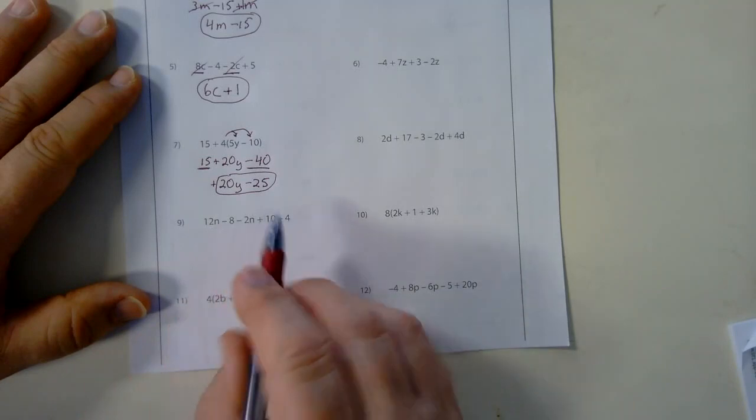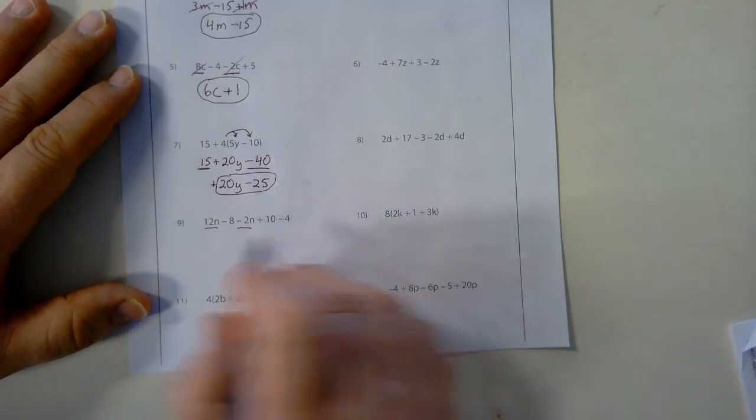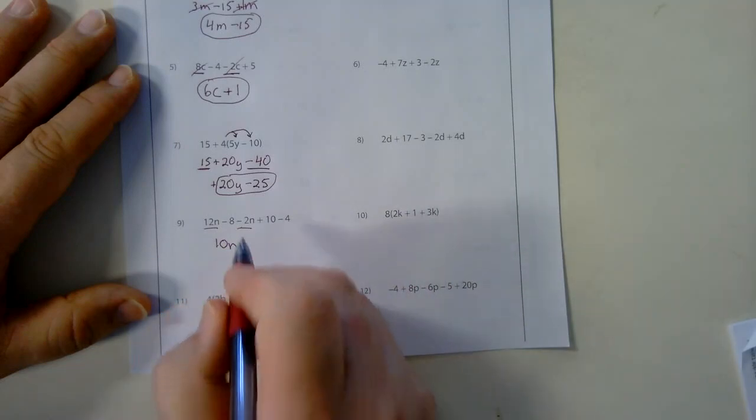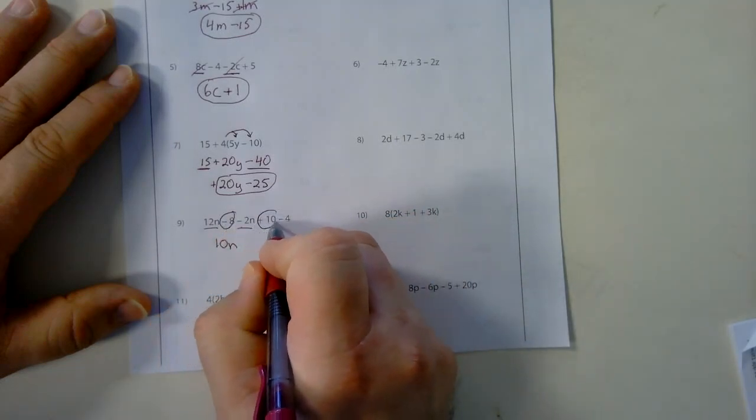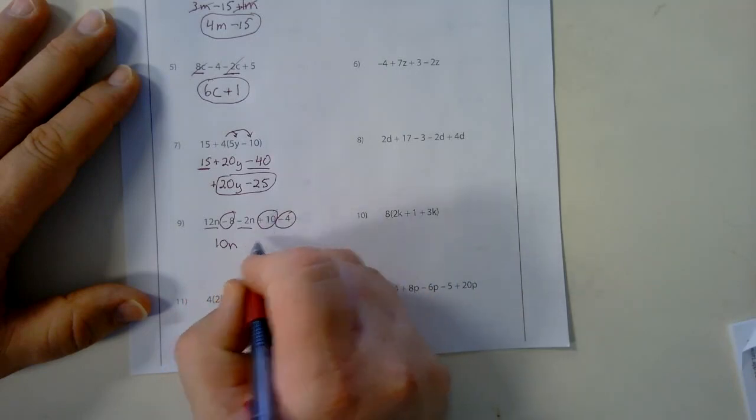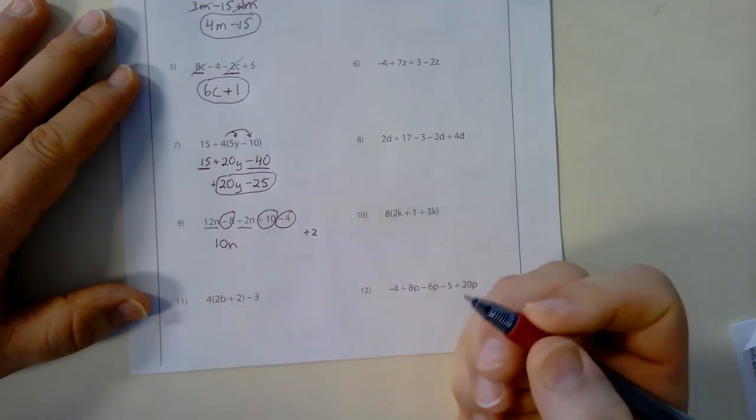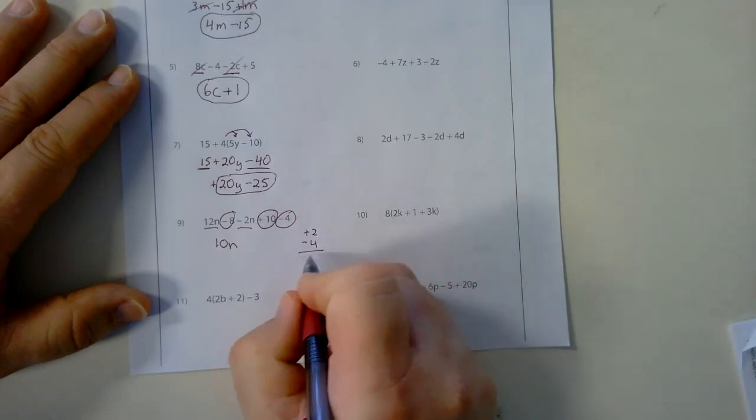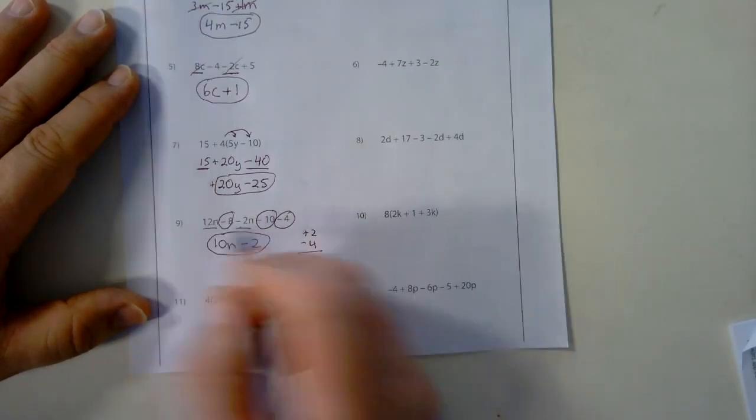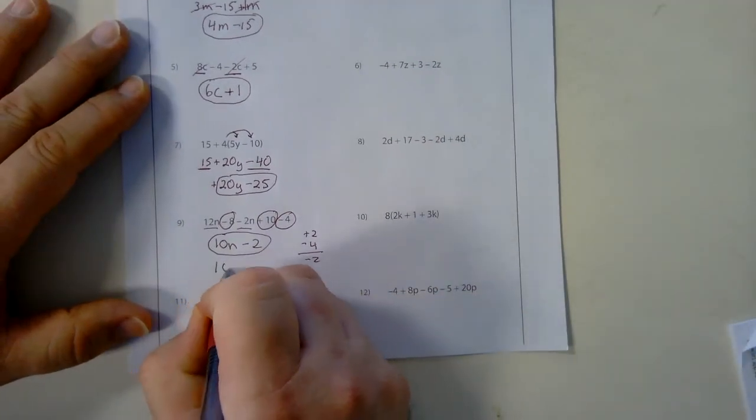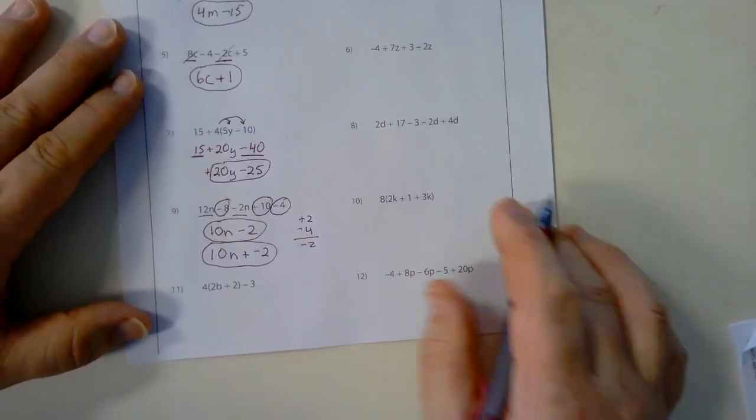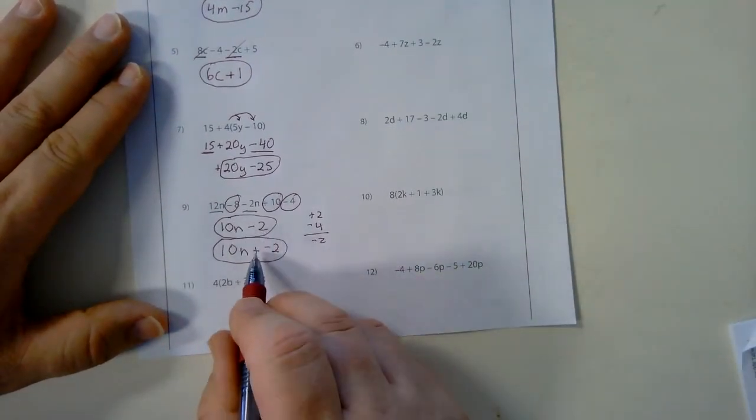Number 9. 12n minus 2n are my only variables. So I'm going to put those together because they are like terms. That gives me 10n. And now I have three numbers. The negative 8, a positive 10, and a minus 4. So let's go negative 8 plus 10 is positive 2. I'm going to write that on the side. Positive 2. Then I have this minus 4 at the end. So if I add those together, it will give me a minus 2. And that will be my final answer then. 10n minus 2. Some of you may have this for a final answer. 10n plus a negative 2. Both of those are correct answers. It just depends on how you would like to write it. Either with a minus 2 or with a plus negative 2.